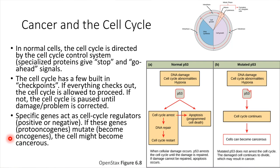If a cell has oncogenes, that cell might become cancerous. A good example is the gene that encodes a protein called p53. Ordinarily, if there's damage to the DNA — perhaps the cell was exposed to too much high energy radiation — p53 is the protein that would recognize that. It would essentially pause the cell cycle, not allowing the cell to continue, until the DNA is repaired, and then it would allow the cell cycle to continue.